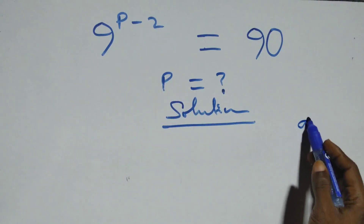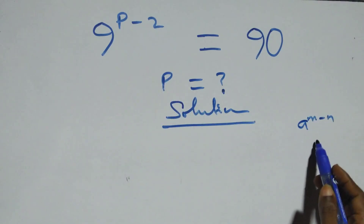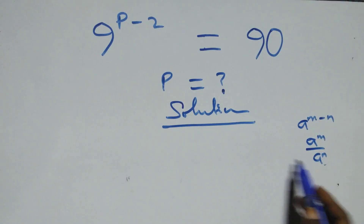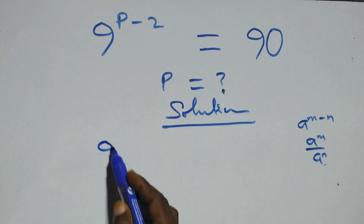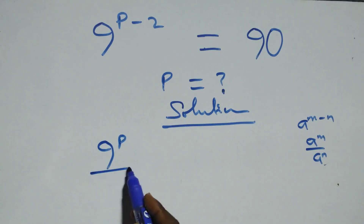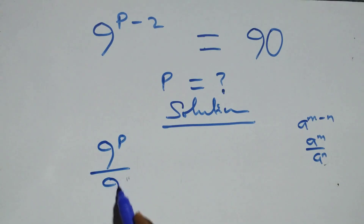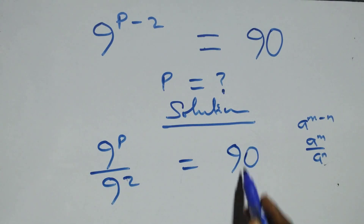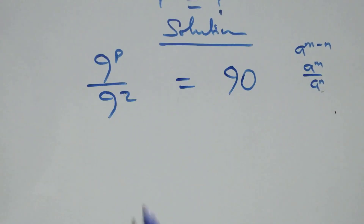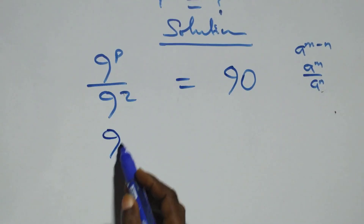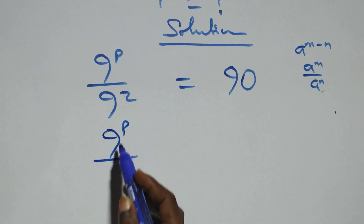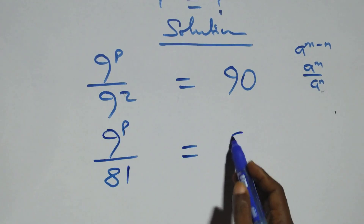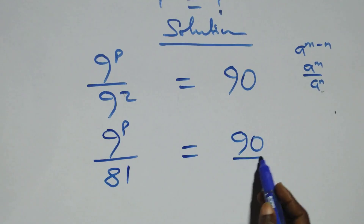This follows: a raised to power n minus n is the same thing as a raised to power n over a raised to power n. So this becomes 9 raised to power p over 9 squared, which equals 90. And 9 squared is 81, so we have 9 raised to power p over 81 equals 90 over 1.